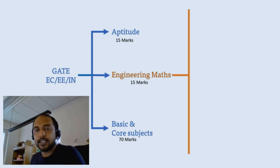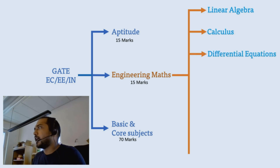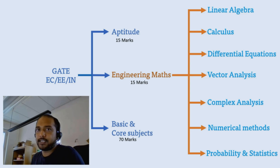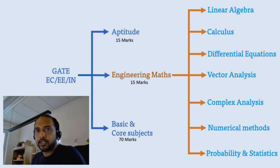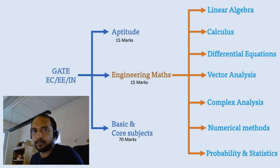You have seven topics in engineering maths that you have to cover for the GATE exam. First is linear algebra, then calculus and differential equations, vector analysis, complex analysis, numerical methods, and probability and statistics. All of these topics are very important. For example, if you are studying for electronics and communication, vector analysis and calculus are very important for the electromagnetics subject.